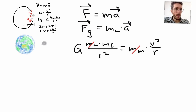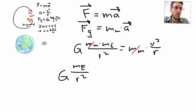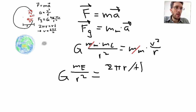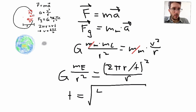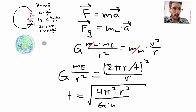So we rewrite: G times the mass of the Earth over r squared equals v squared. We already determined that v equals 2πr over t, so substituting v squared gives (2πr/t)² over r. Solving for t, the period — the time it takes the Moon to go around the Earth once — is the square root of 4π² times r cubed divided by G times the mass of the Earth.